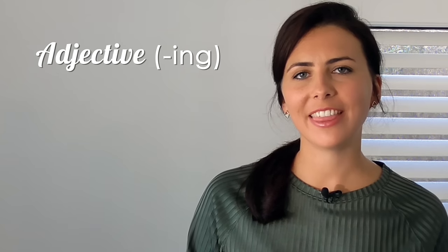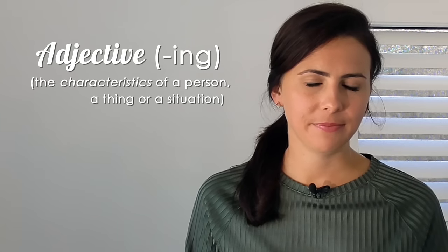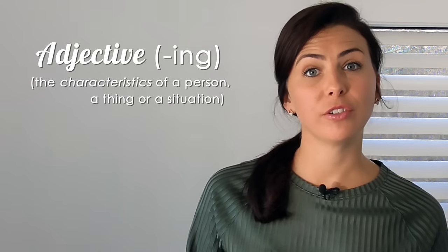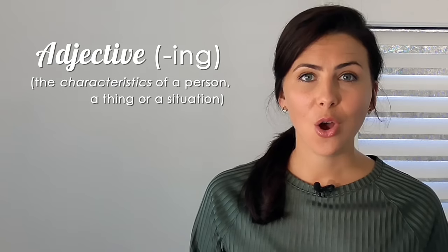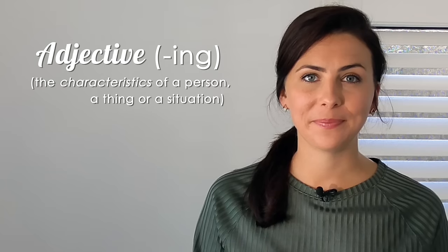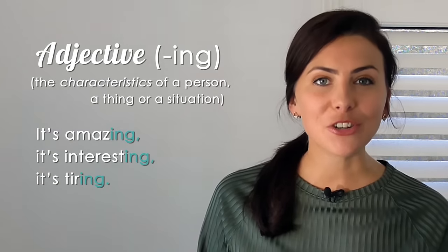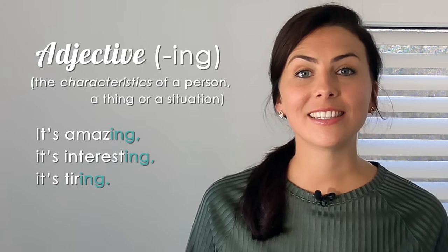But you need to know how to use each of these types of adjectives and we're going to do that right now, right here in this lesson. An adjective that ends in -ing is used to describe the characteristics of something, the characteristics of a person or a place or a thing or a situation. It's amazing, it's interesting, it's tiring.